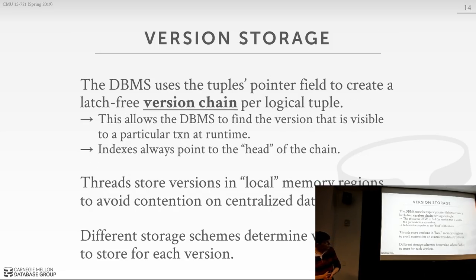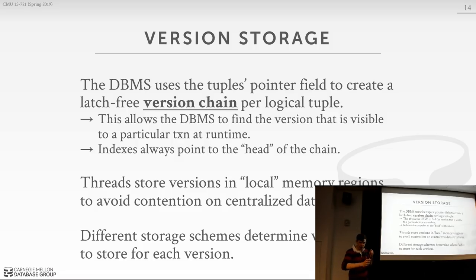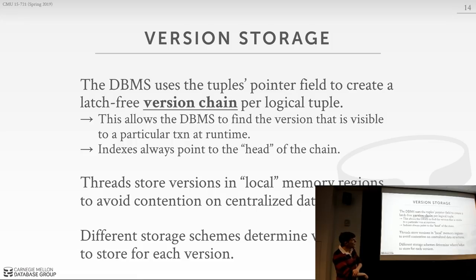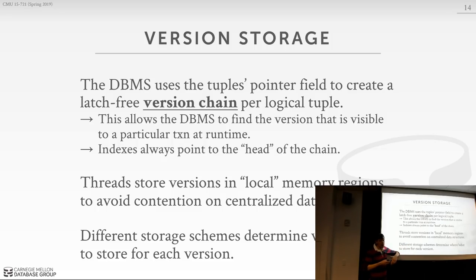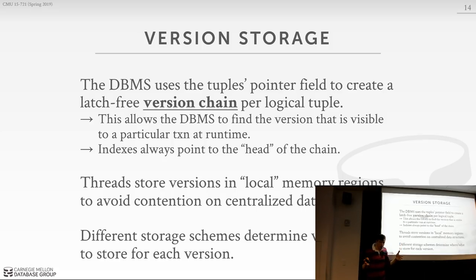Now we can talk about version storage. We're going to use the 64-bit pointer field in each tuple to build a latch-free linked list — a version chain — for all the versions belonging to a single logical tuple. This allows us to quickly jump to find the version we want for a particular tuple. The indexes are always going to point to what we call the head of the linked list. Whether the head is the oldest or newest version depends on the implementation. All these different versions we generate will be stored in local memory regions or local memory pools for each thread — every thread does its own malloc on local storage close to where it's physically located — so we can make new versions quickly without synchronizing on a global data structure.